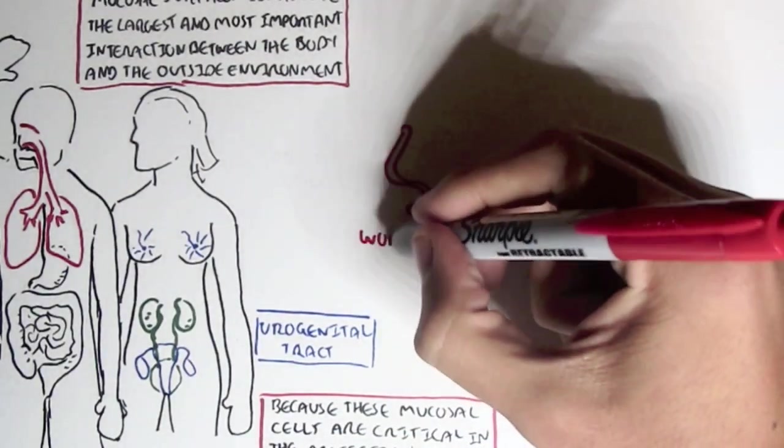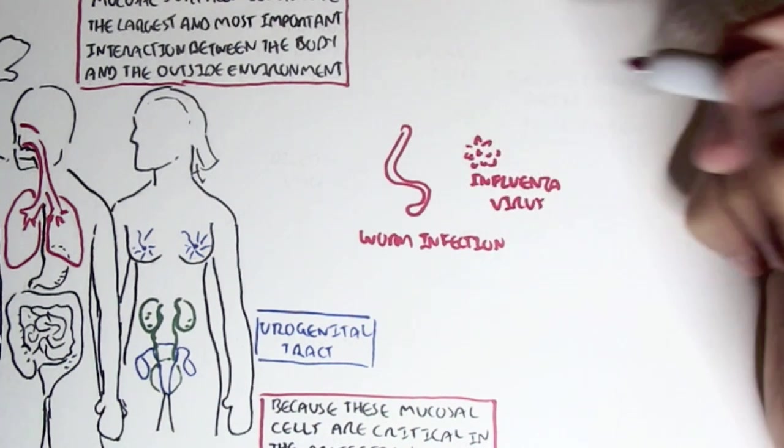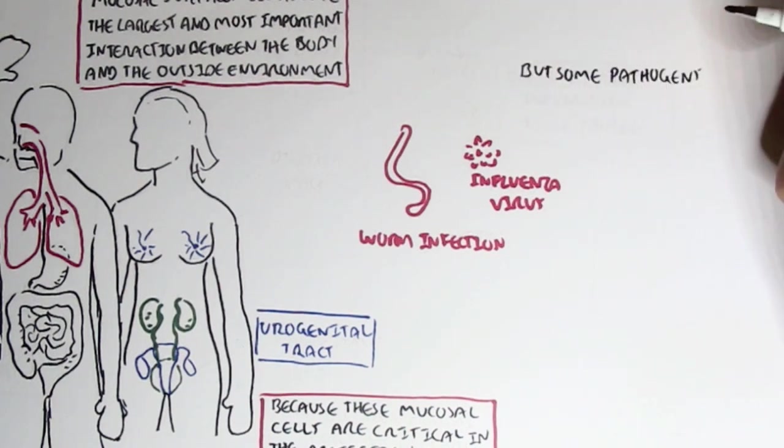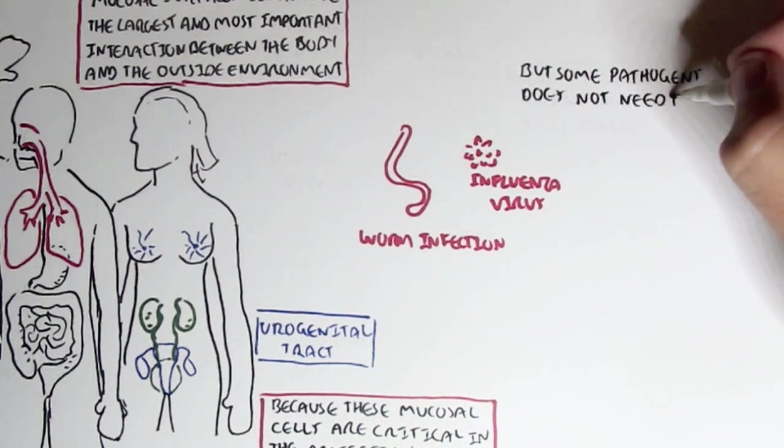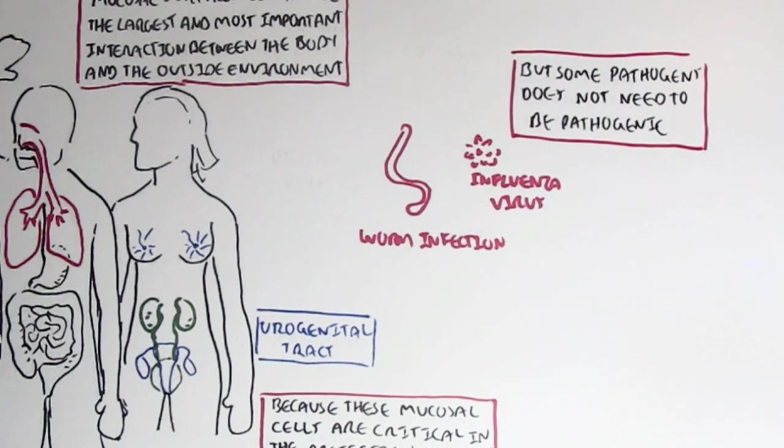Mucosal surfaces as mentioned are continuously exposed to pathogens and so are prone to infections. Such as within the gastrointestinal tract you can have worm infection and within the respiratory tract we can have viruses which causes flu.